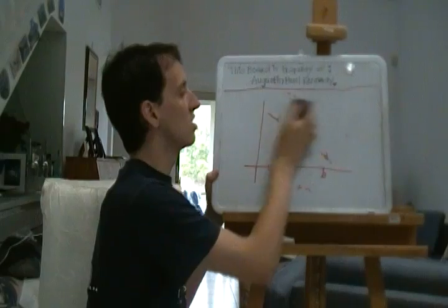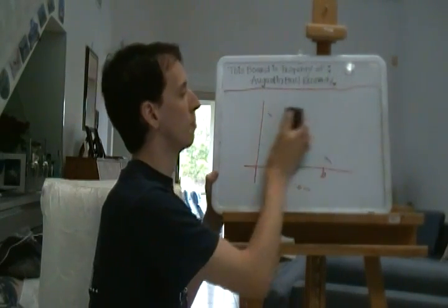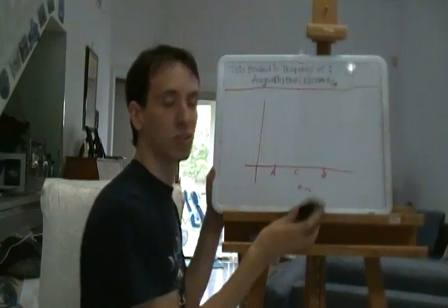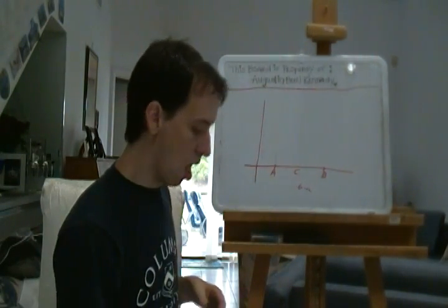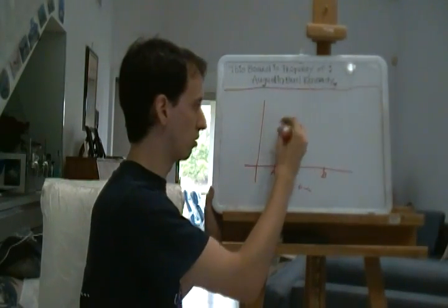So, we can see that that's basically like Rolle's theorem. Rolle's theorem is, in fact, just a special case of the mean value theorem, where a equals b. Now, what else can we find? We can use other examples.